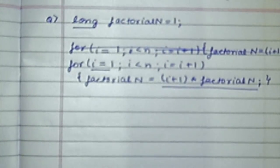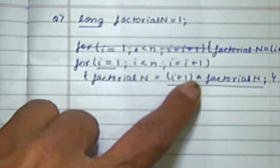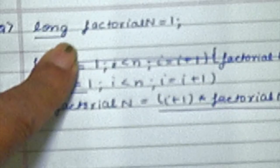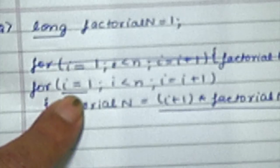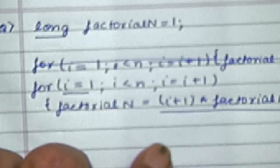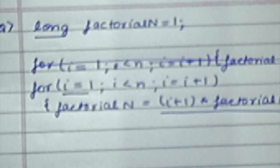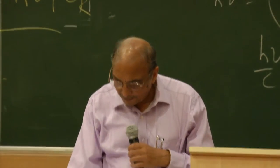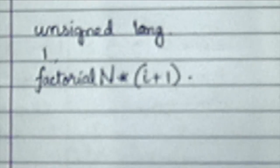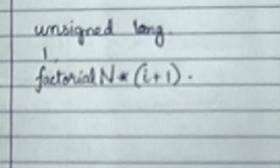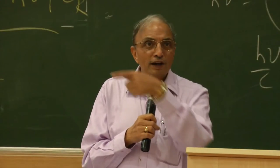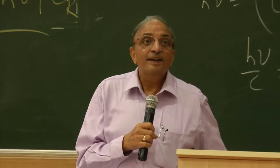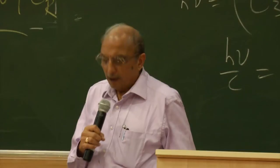We will look at another solution: long factorial_n, with i equal to one, and factorial_n equals i plus one times this. How many of you think this is correct? People have a problem with 'long factorial_n' — should it be long int? And i equal to one is correct? But people also said i equal to zero was correct. How can both be correct? Both i equal to zero and i equal to one can find the factorial correctly — that is not a problem.